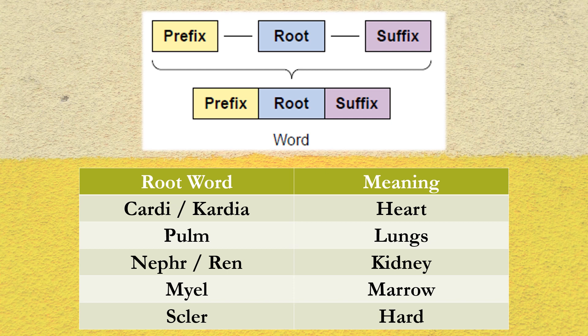If you observe closely, most medical terms can be divided into parts: roots forming the center, prefixes which are attached before the root, and suffixes which are attached after. These three components ensure to maintain the same meaning whenever they appear. By learning these meanings you can analyze, dissect, and remember many words just like that.